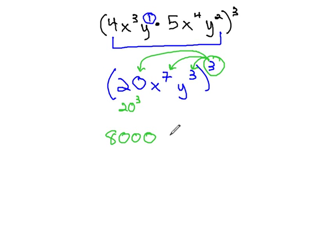When we get to the x to the 7th and cube that, now we are combining two exponents together. Now we do multiply the exponents. 7 times 3 is 21, and y to the 3 times 3 is 9, and we have our final solution.